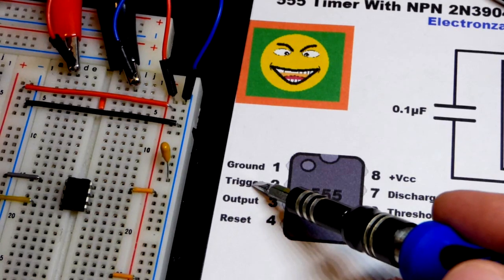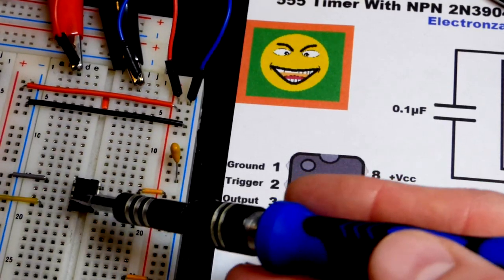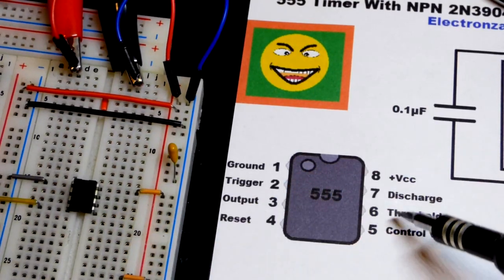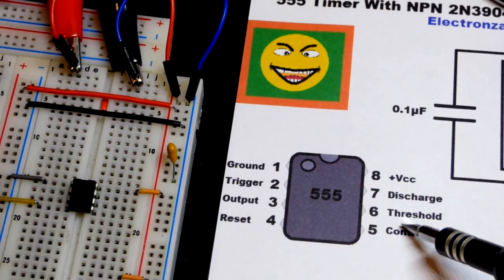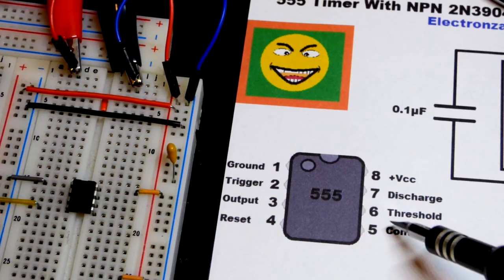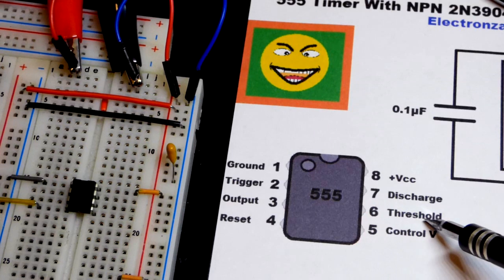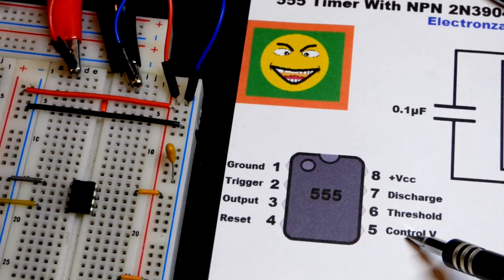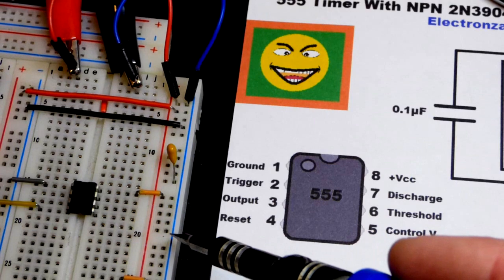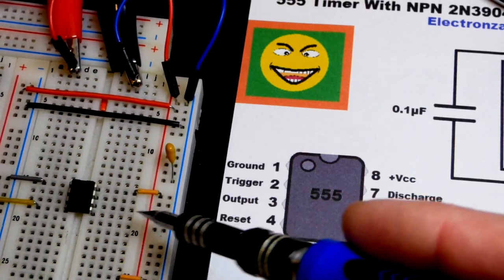We've got trigger pin number 2, output pin number 3 right there, and then we come over. Other than the power pin, for this particular circuit, everything on the right here, all we're going to use is the threshold pin.